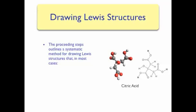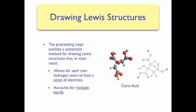The following steps outline a more systematic method for determining Lewis structures that, for most cases, allows each non-hydrogen atom to have an octet, or 8 electrons surrounding it. In addition, each hydrogen atom will have 2 electrons next to it so that it has the same electron configuration as a helium atom. This method is also useful because it accounts for all multiple bonds — that is, it will reproduce double and triple bonds within the molecule.